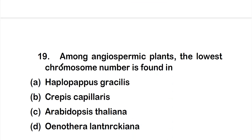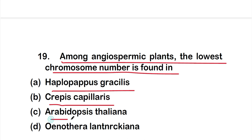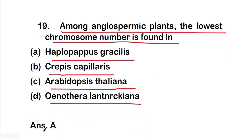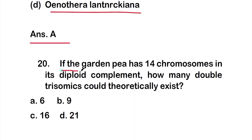Question nineteen: among angiospermic plants, the lowest chromosome number is found in — option A: Haplopappus gracilis, option B: Crepis capillaris, option C: Arabidopsis thaliana, or option D: Oenothera lamarckiana. The right answer is option A, Haplopappus gracilis.